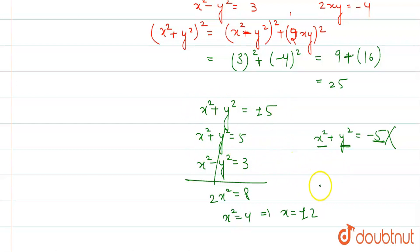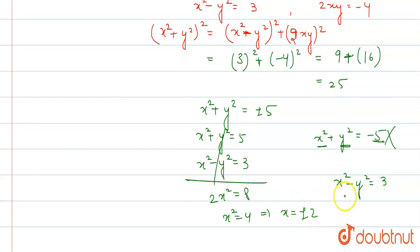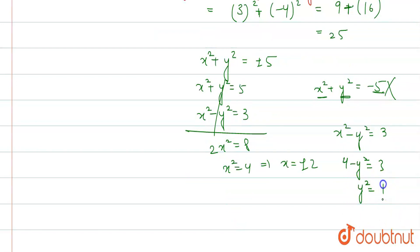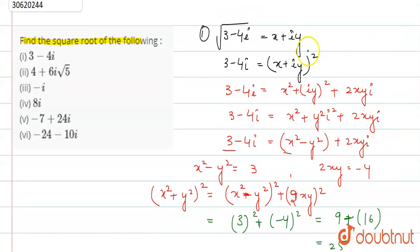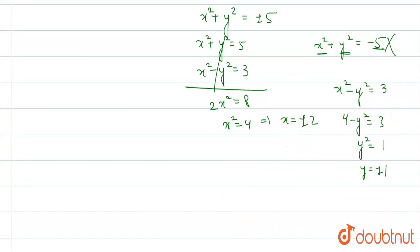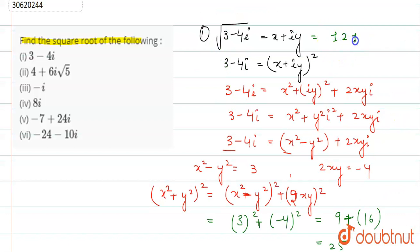If x equals plus or minus 2, solving x squared minus y squared equals 3 gives 4 minus y squared equals 3, so y squared equals 1 and y equals plus or minus 1. Therefore the square root of (3 minus 4i) is plus or minus (2 plus i).